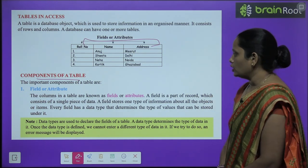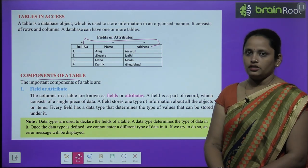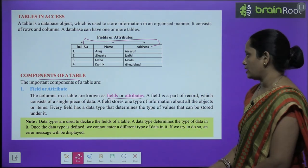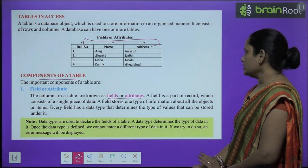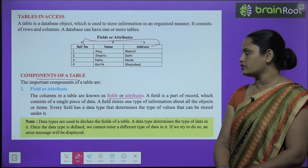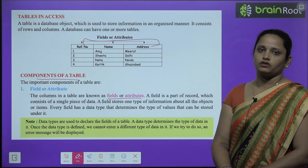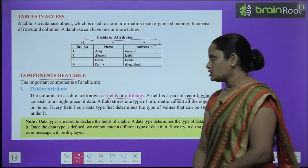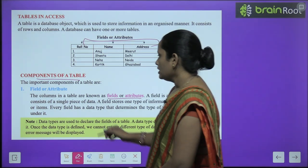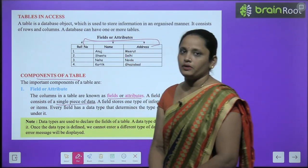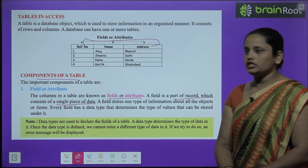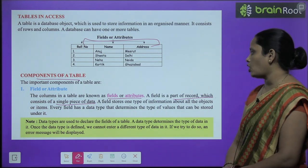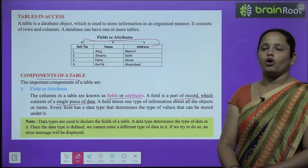The columns in the table are known as fields. A field is a part of a record which consists of a single piece of data. A field stores one type of information about all the objects or items.